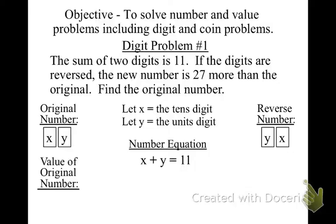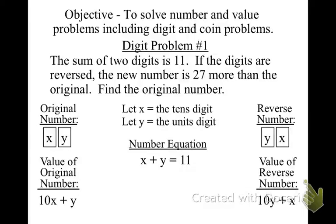So if that's the case, that's the value of the original problem. Let's look at the value of the reverse. What would that be? It would be 10y plus x. Yes. Do you understand why it's 10y plus x and 10x plus y? Because the x is in the tens column, y is in the ones. So now I'm ready to translate that second part.